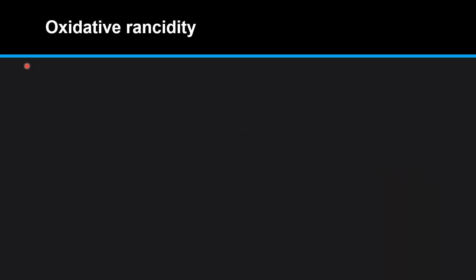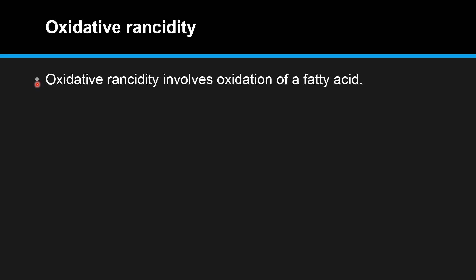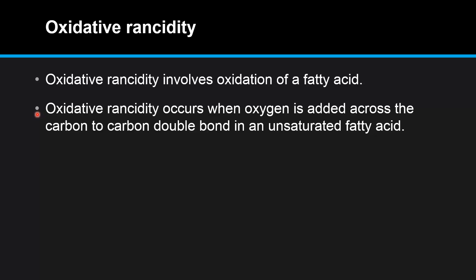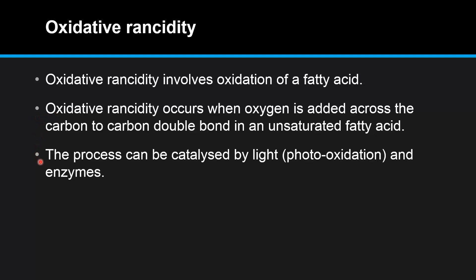Next we look at oxidative rancidity. Oxidative rancidity involves oxidation of a fatty acid — it occurs when oxygen is added across the carbon to carbon double bond in an unsaturated fatty acid. The process can be catalyzed by light, which is called photo-oxidation, and enzymes.